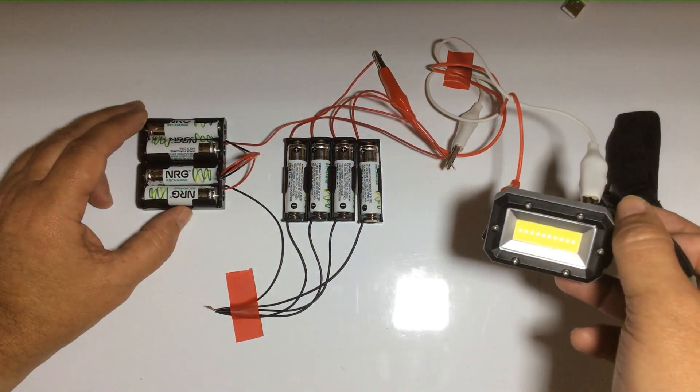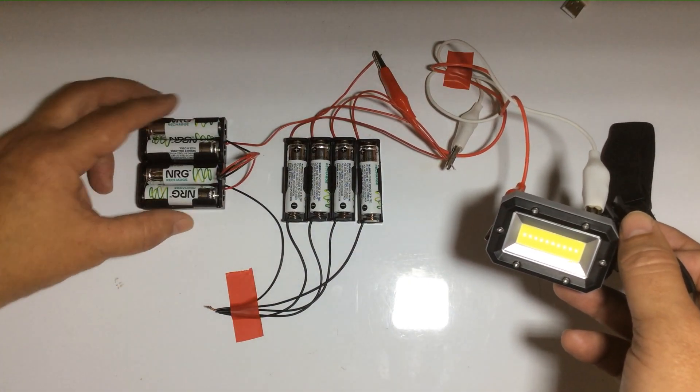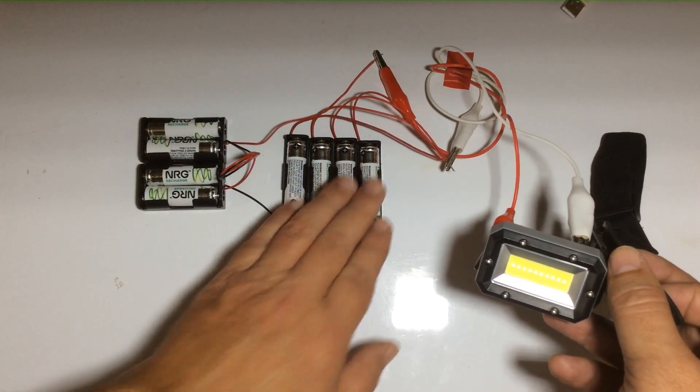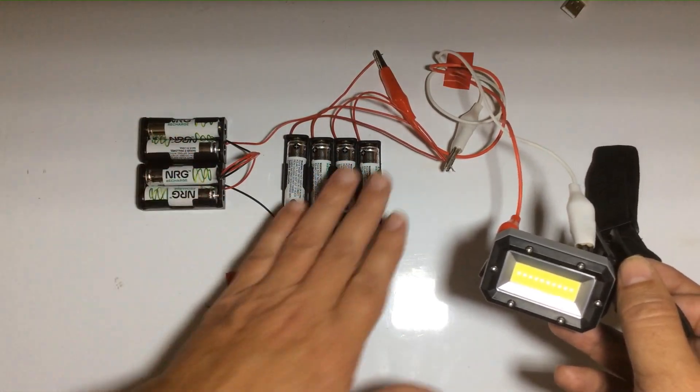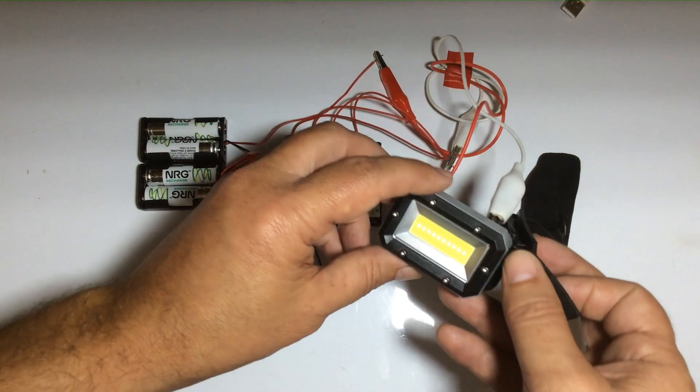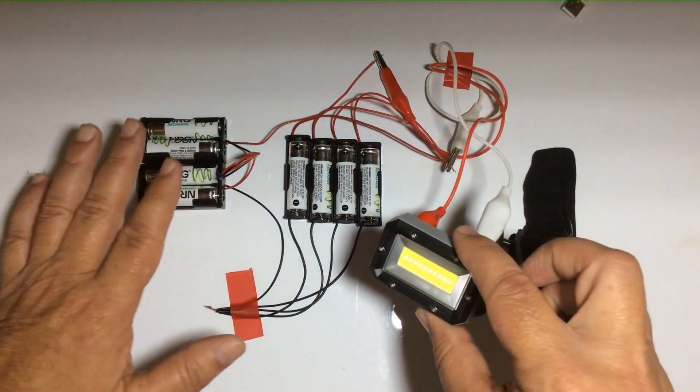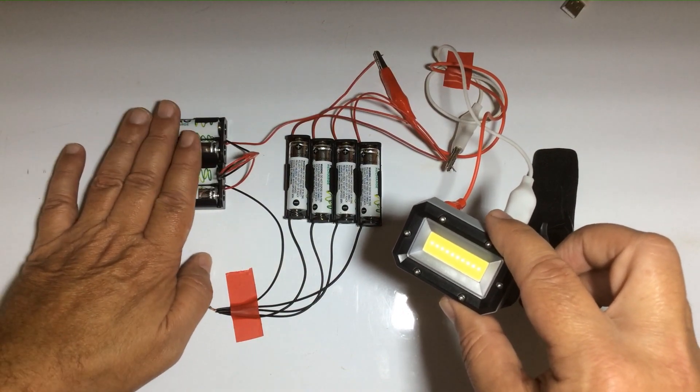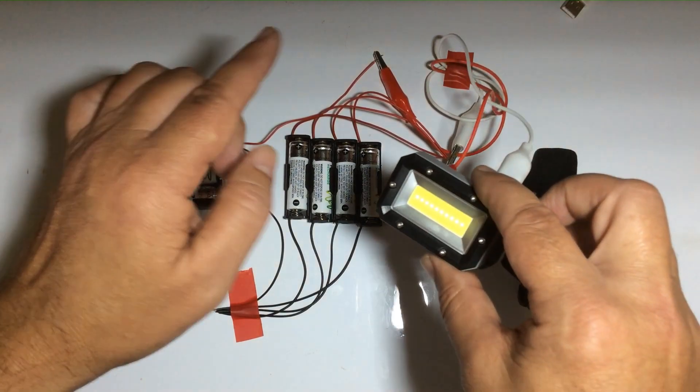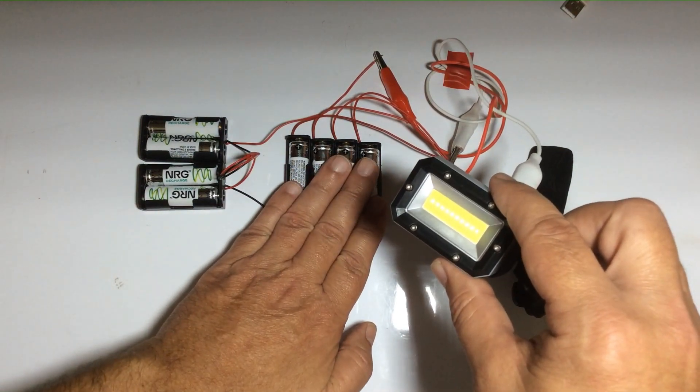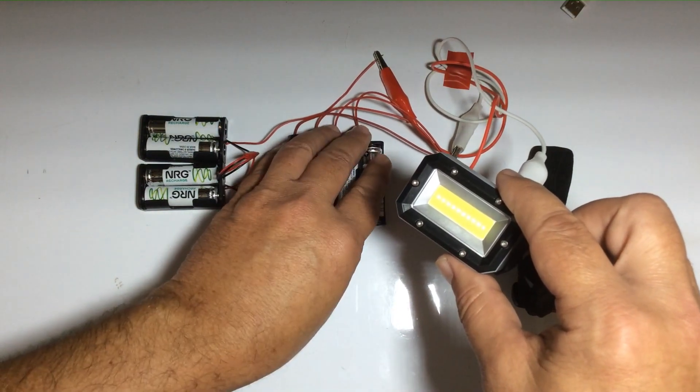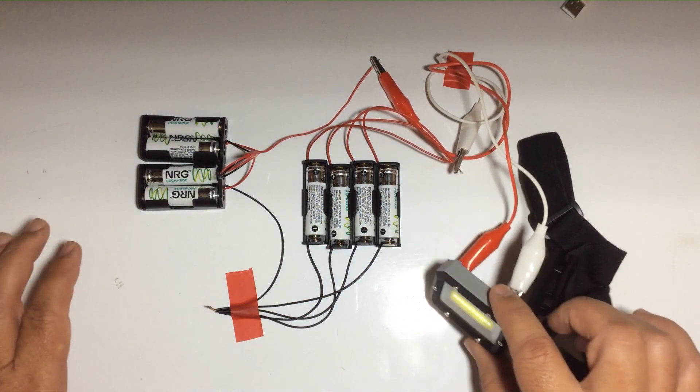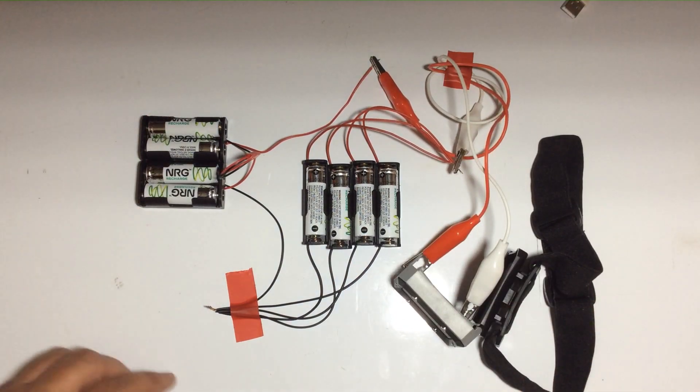It's very basic. These batteries here are in series, these are in parallel. Basically this circuit runs the energy from the series connected batteries through the light into the parallel connected batteries.